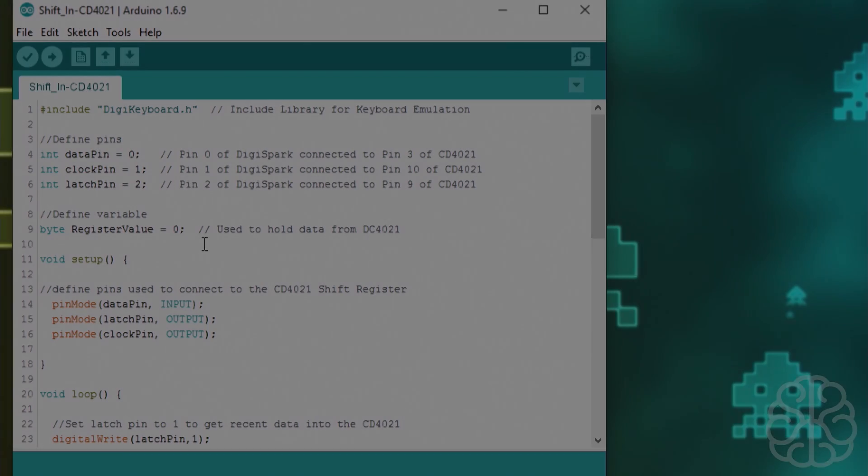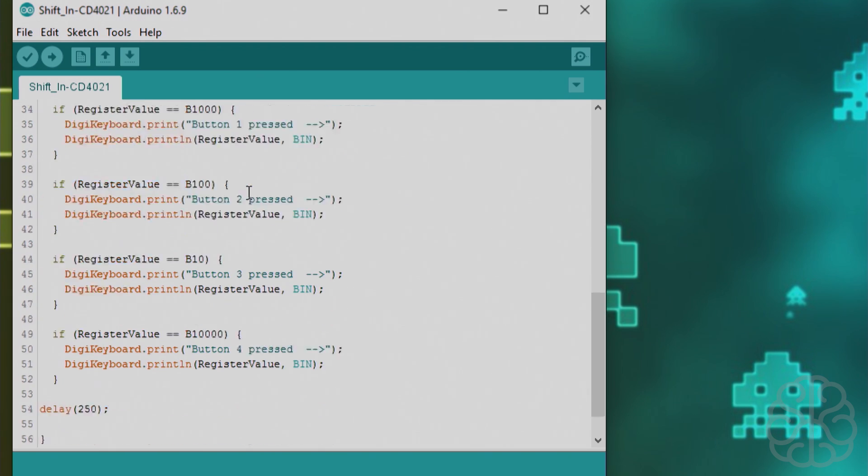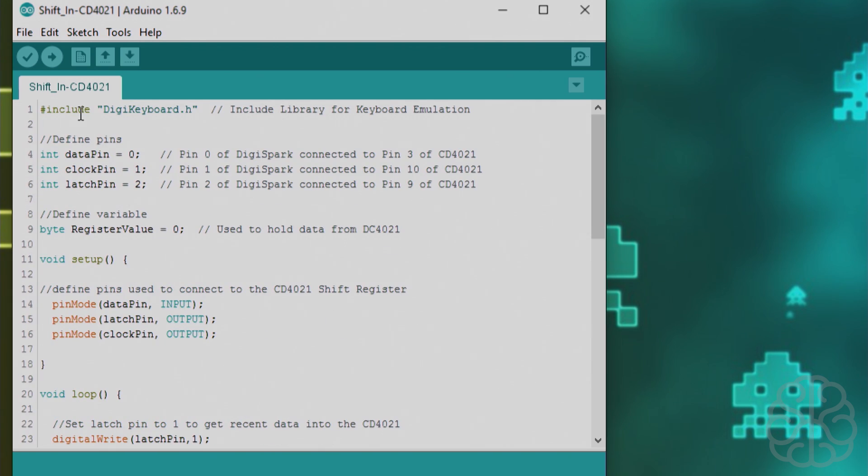Here's the code we're gonna use today. It's not very long. Let's start from the top. We're including the DigiKeyboard library that's gonna do keyboard emulation on the DigiSpark. You can find a link for that library at www.brainybits.com. You'll find the schematic, the code, more explanation and all that stuff. After that we define the pins: the data pin, the clock pin, and the latch pin, so 0, 1, and 2.